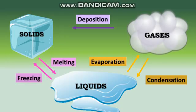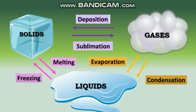When a gas changes into a solid, this is called deposition. For example, when water vapor changes into ice, this can happen directly when it's very cold and can usually happen on windows during the winter.